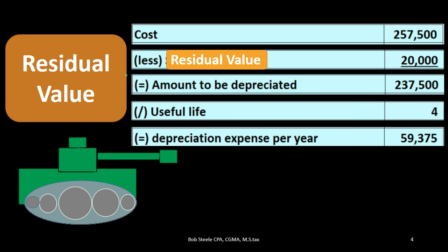With a useful life of four years, we depreciate an even amount of 59,375 each year. At the end of those four years, we will have total accumulated depreciation of 237,500 and a book value — cost less accumulated depreciation — of 20,000. That 20,000 is the residual value: the value left over after the asset has been fully used up.